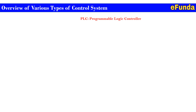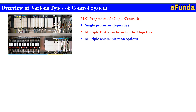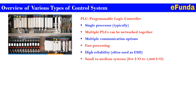The first type is the PLC, Programmable Logic Controller. One can refer to the picture to get a feel of how the PLC system looks, which consists of a single processor. Typically, multiple PLCs can be networked together. It offers multiple communication options, fast processing, and high reliability. It is often used as an emergency shutdown system and suits small to medium systems with few IOs to thousands of IOs.